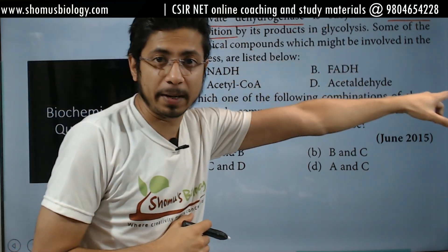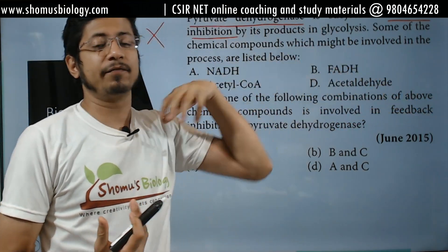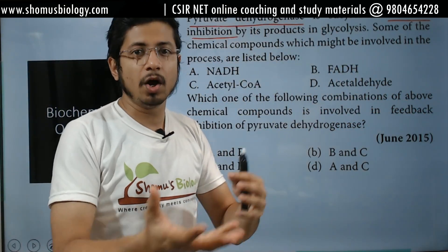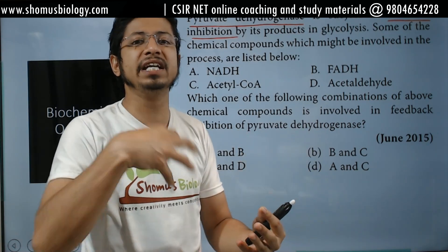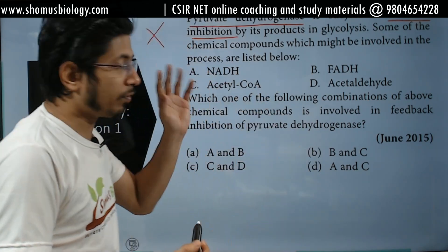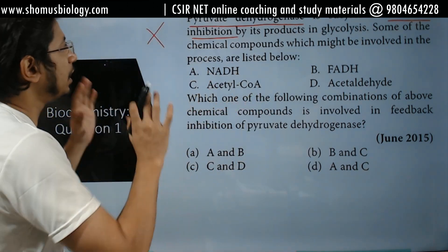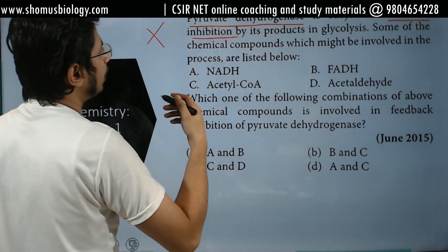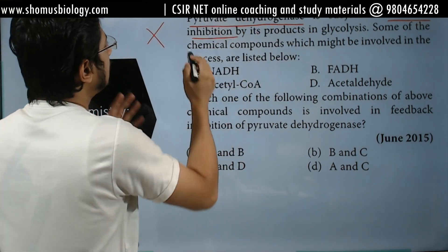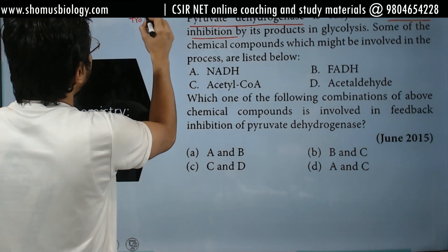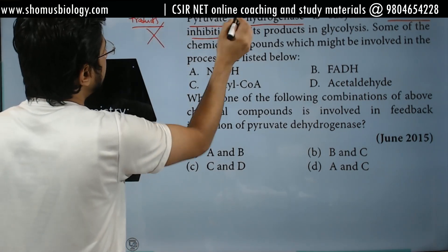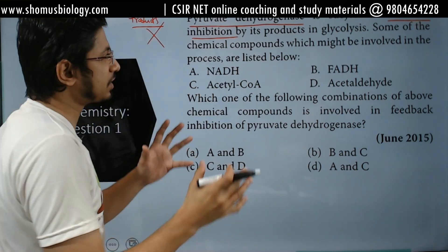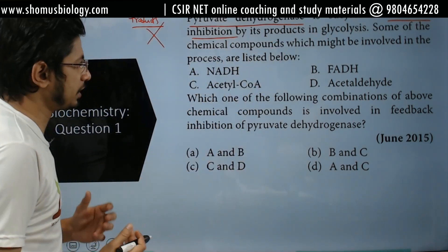Don't waste your time. But if you know what feedback inhibition is — feedback inhibition is a process of enzyme inhibition where the products of the enzymatic reaction inhibit the enzyme. So in the pyruvate dehydrogenase complex, what we are going to look for are the products of the pyruvate dehydrogenase complex reaction. Those products will inhibit the whole process.